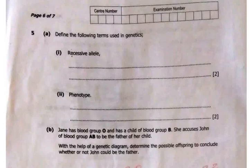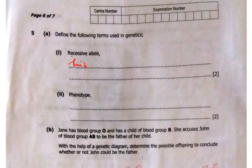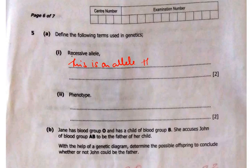Define the following terms used in genetics. The first term we have is recessive allele. A recessive allele is one that is overshadowed in the phenotype by the presence of a dominant allele.